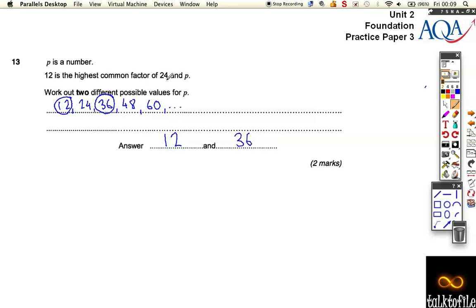Also, 12 isn't the biggest number to go into 24 and 48 because 24 goes into 48, so 24 must be bigger. We could have also chosen 60, and so on and so on.